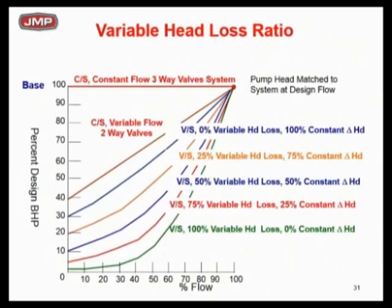What happens as you change the relationship of total pump head — variable versus constant? On this diagram, the left vertical axis is horsepower and the bottom axis is flow. The bottom green line represents what variable speed drive theory promises: 100% variable head, 0% constant head. At 50% flow on that green line, I'm at one-eighth horsepower — that's what you were promised, but only if you have 100% variable head.